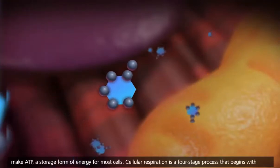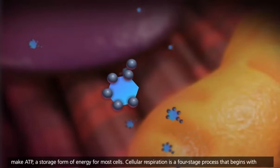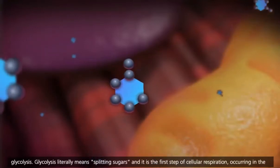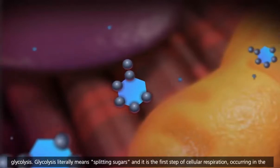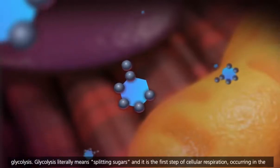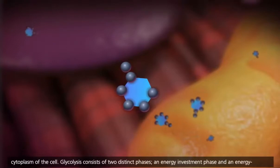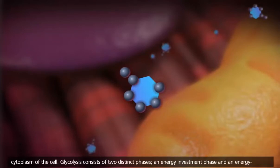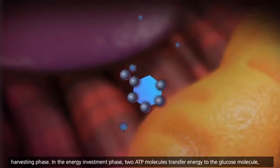Cellular respiration is a four-stage process that begins with glycolysis. Glycolysis literally means splitting sugars, and it is the first step of cellular respiration, occurring in the cytoplasm of the cell. Glycolysis consists of two distinct phases, an energy investment phase and an energy harvesting phase.